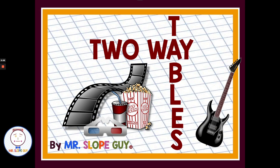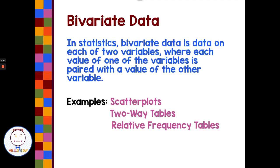Hello. In today's math lesson, we're going to look at some examples of using two-way tables. Two-way tables are bivariate data, which in statistics means data on each of two variables, where each value of one variable is paired with a value of the other variable.